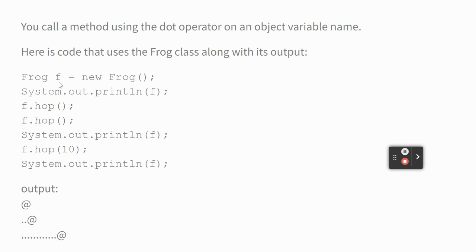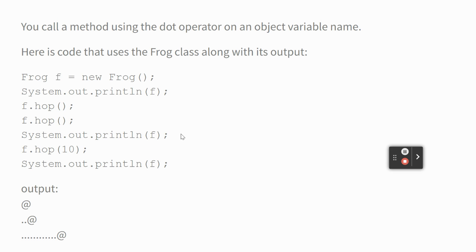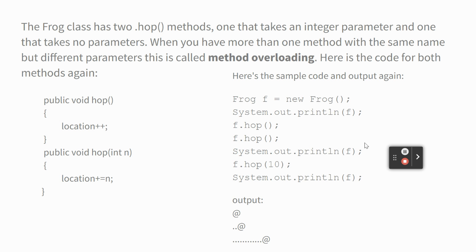Here's some demo code: I create a frog named f and print it — that shows the ampersand symbol. I hop it twice, nothing prints when you hop. Then I print it again and now it's got two dots. Then I hop it 10 more spaces and now it's got 12 dots. That's all the frog does — you hop it and you print it.